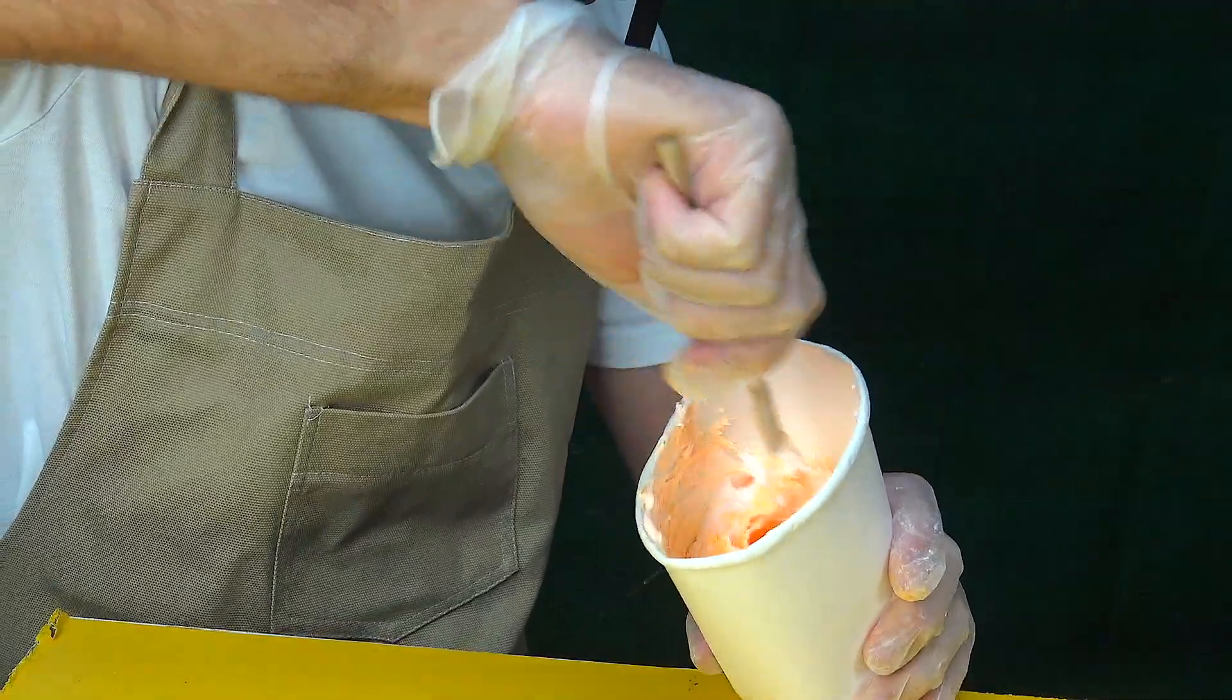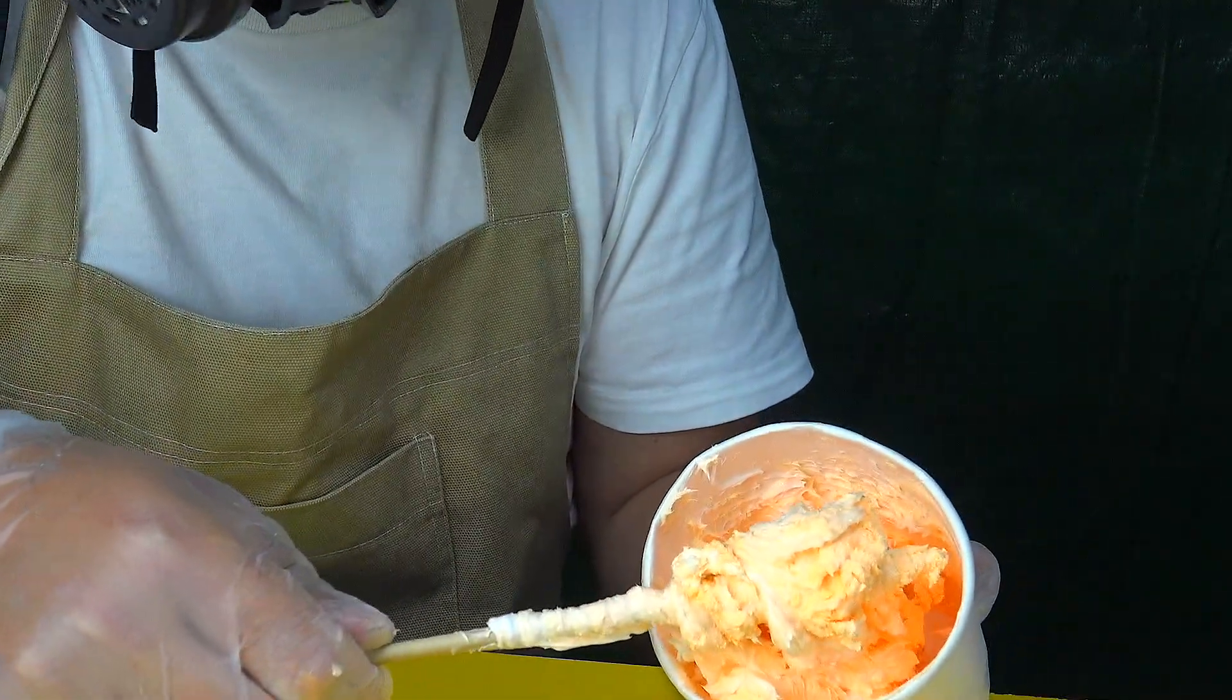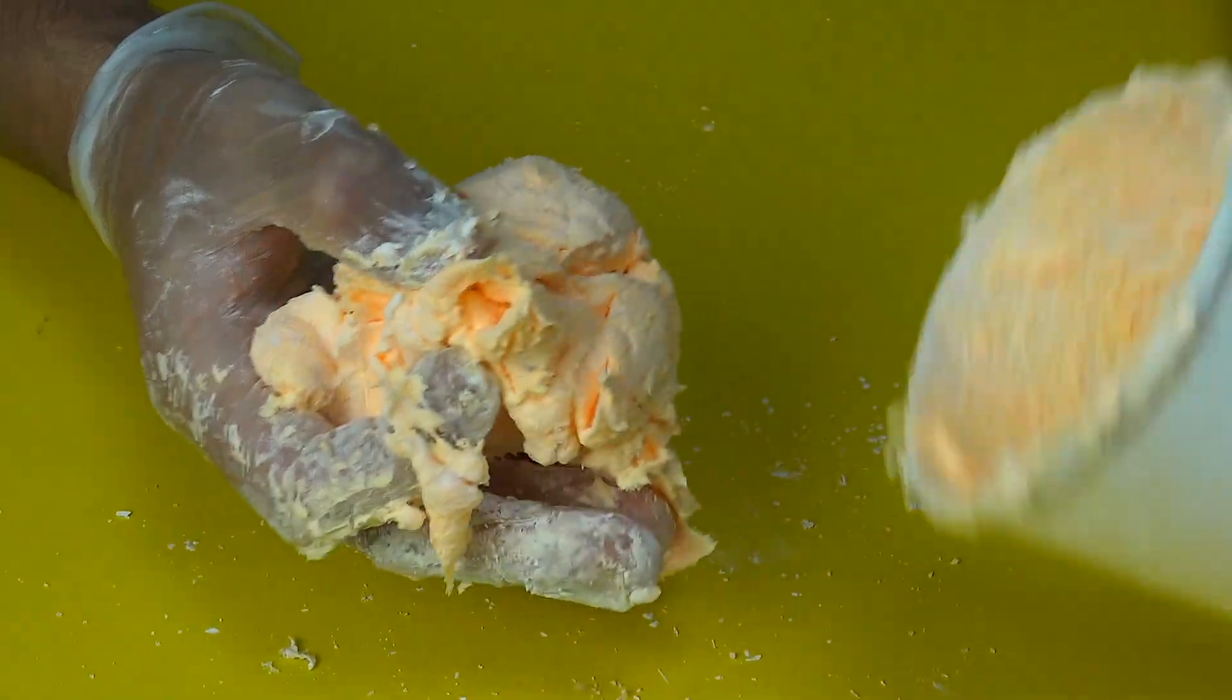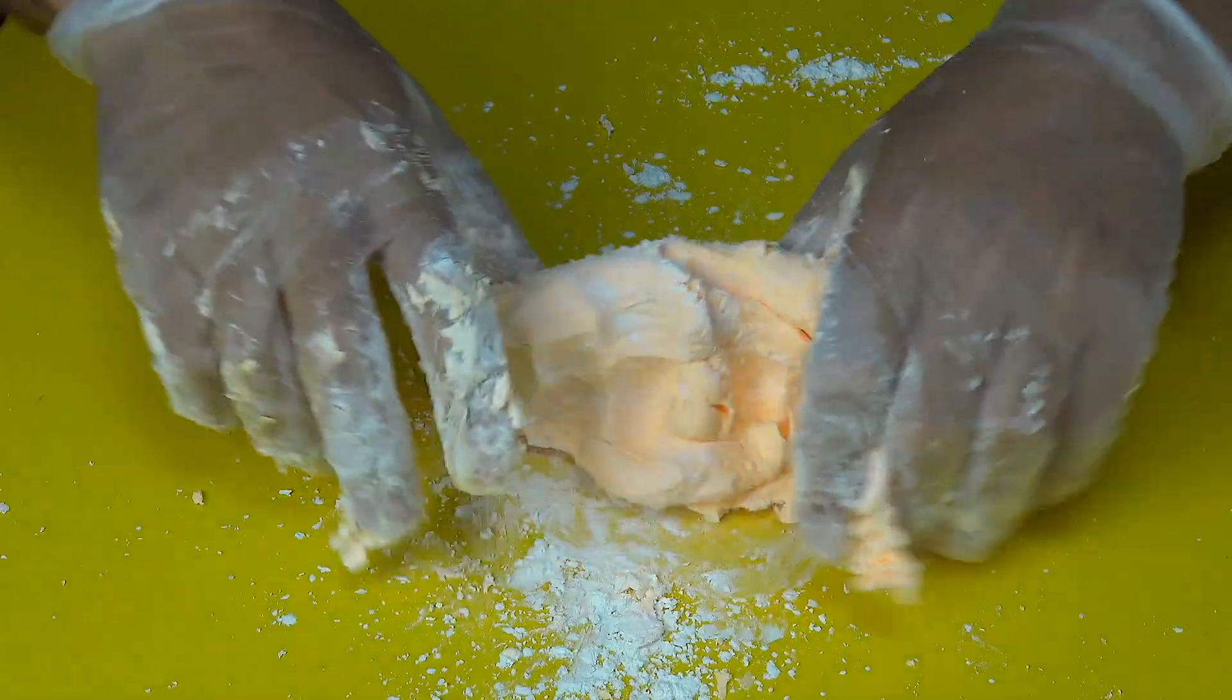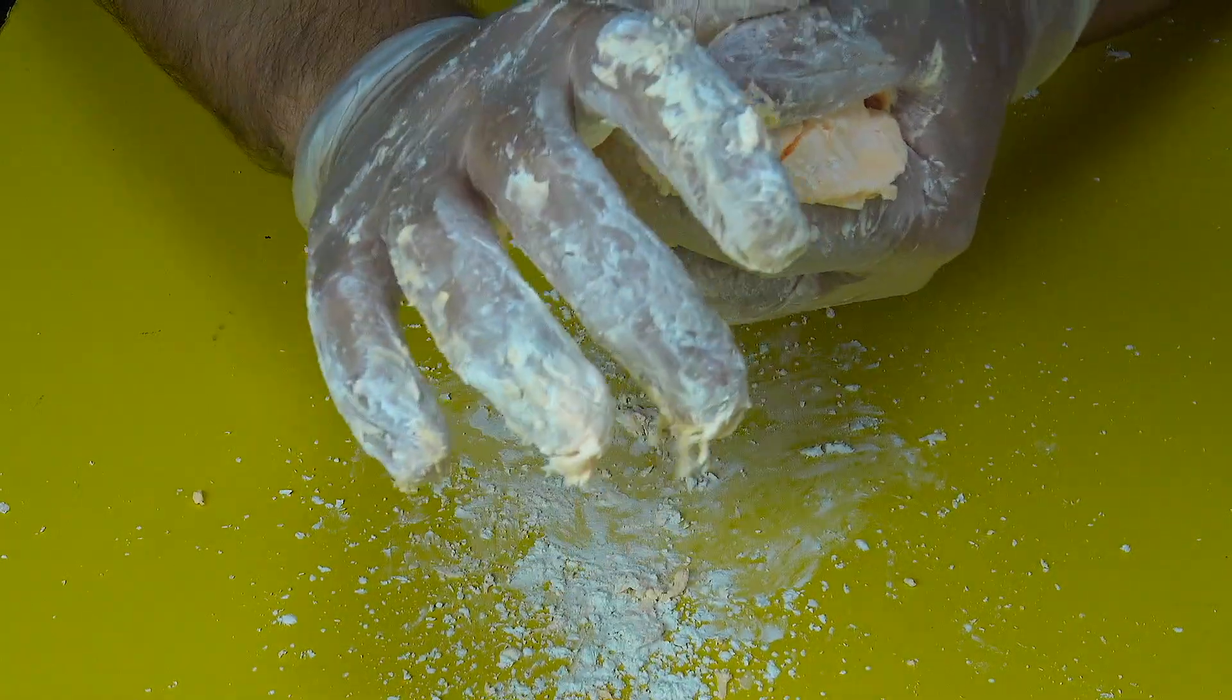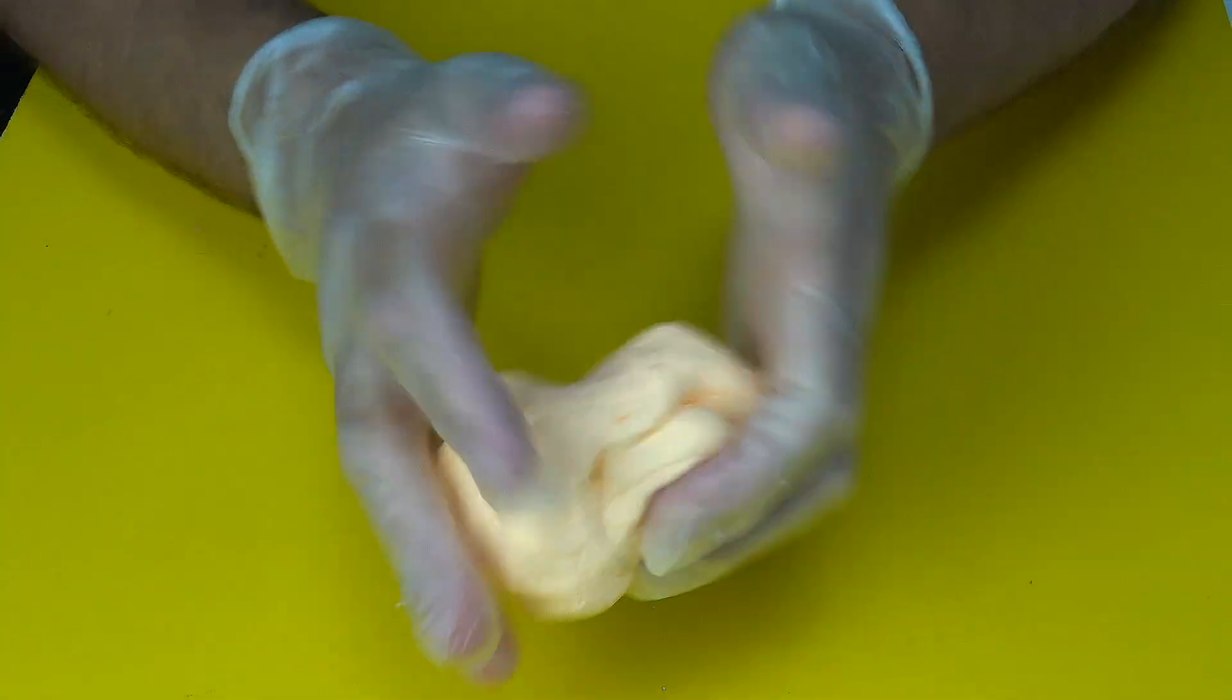Working with the silicone mixture requires maximum speed. If you let it set, it turns into a dense, hard piece of rubber that can't be shaped—it just breaks into chunks. In the first part of the video, we got so caught up with the aluminum mold that by the time we returned to the silicone, it had already hardened.